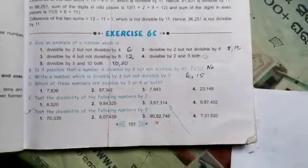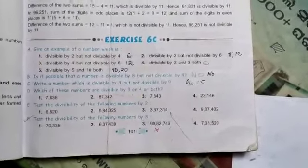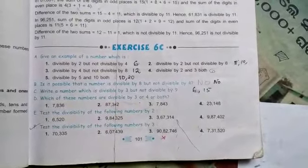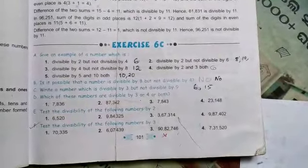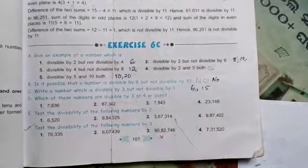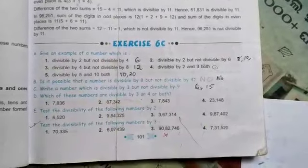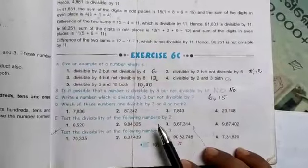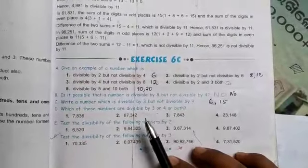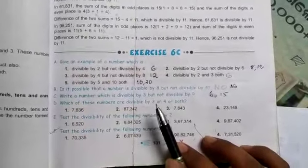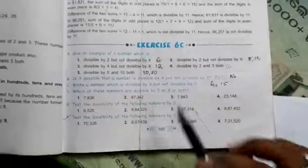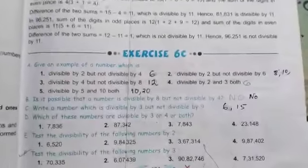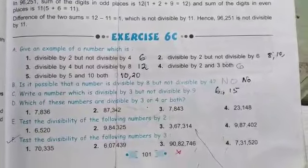Good morning students, this is the CCC. These are the questions you will do in your book. If you know the rules, it will be very easy for you. So suppose the first question — see what is written.